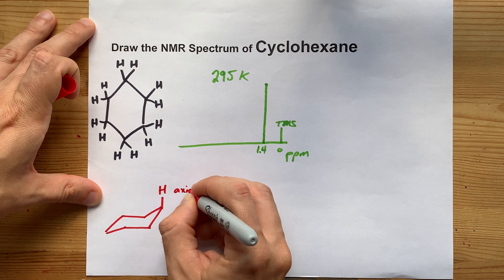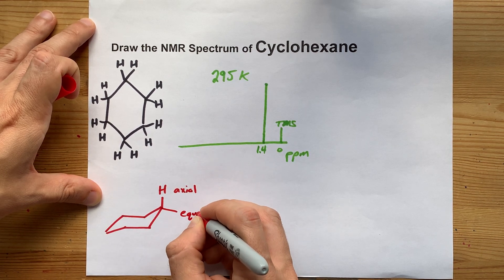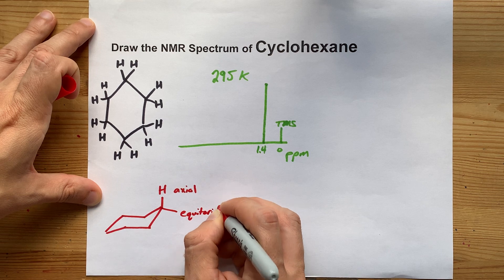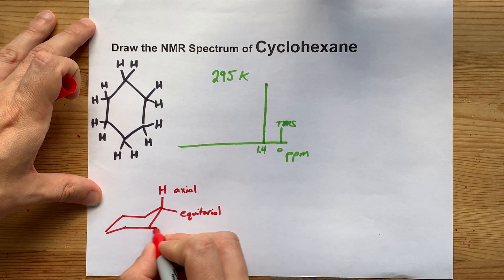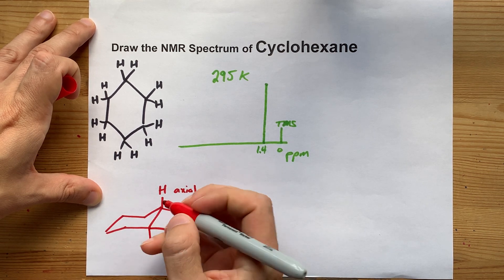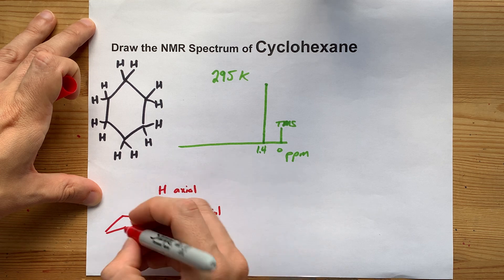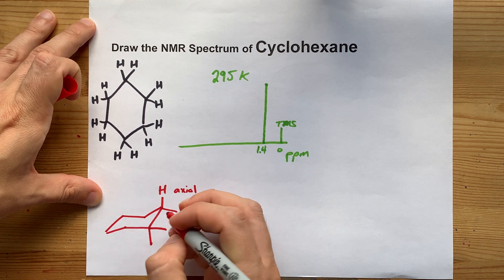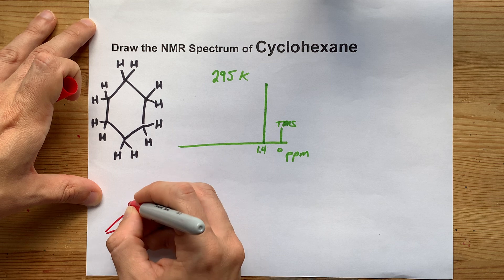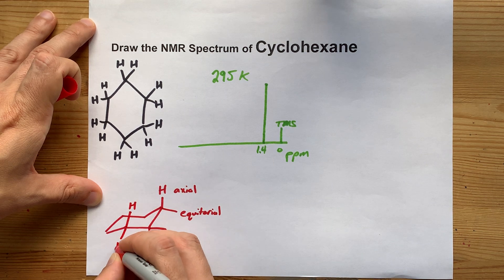You'll remember that there are some axial hydrogens and some equatorial hydrogens. And this matters because it's caused by the fact that all of these atoms are repelling each other.